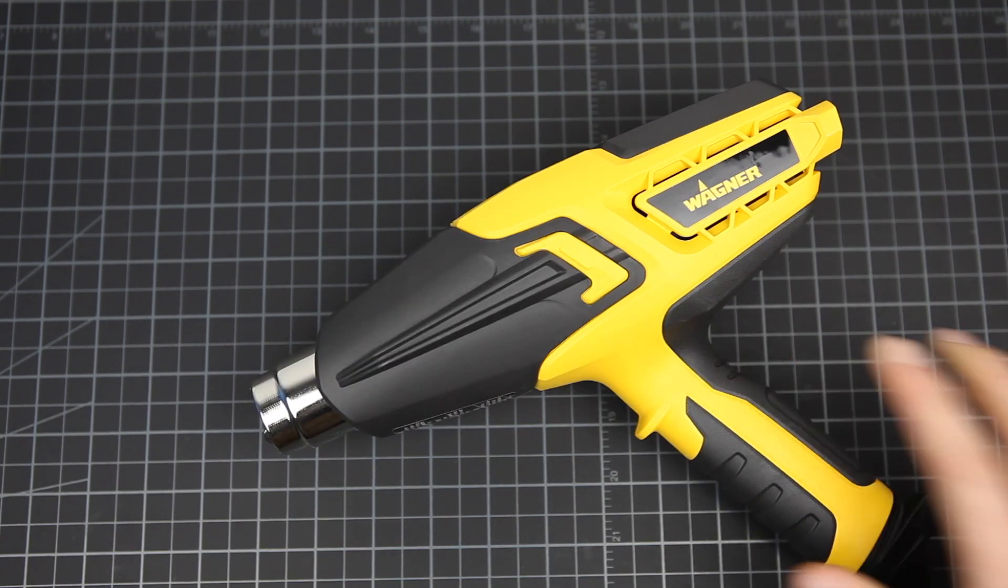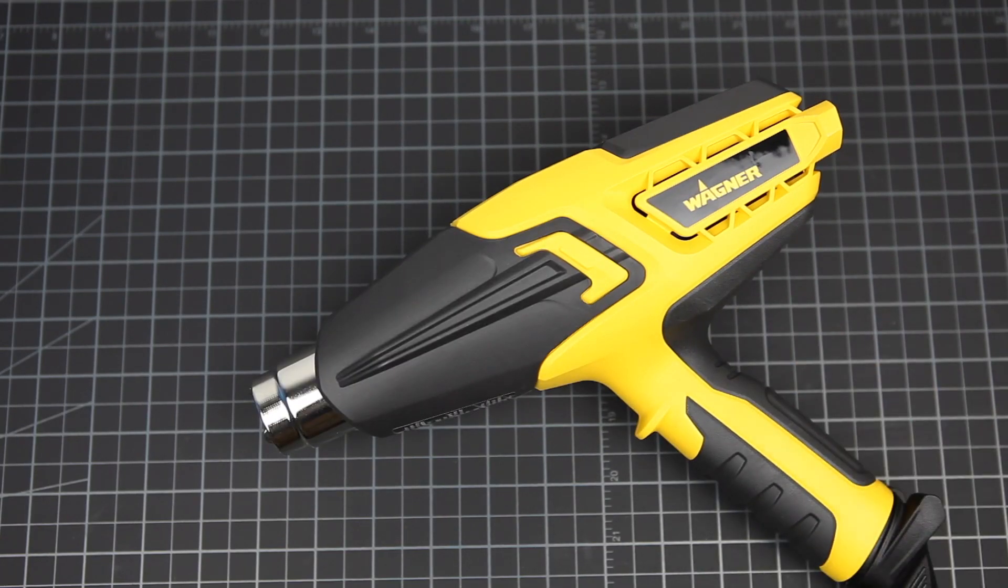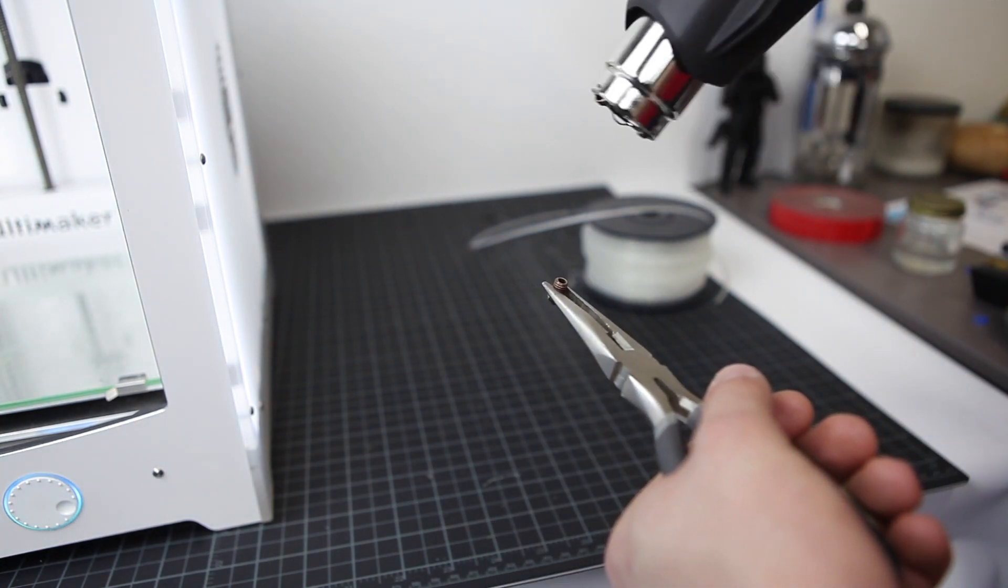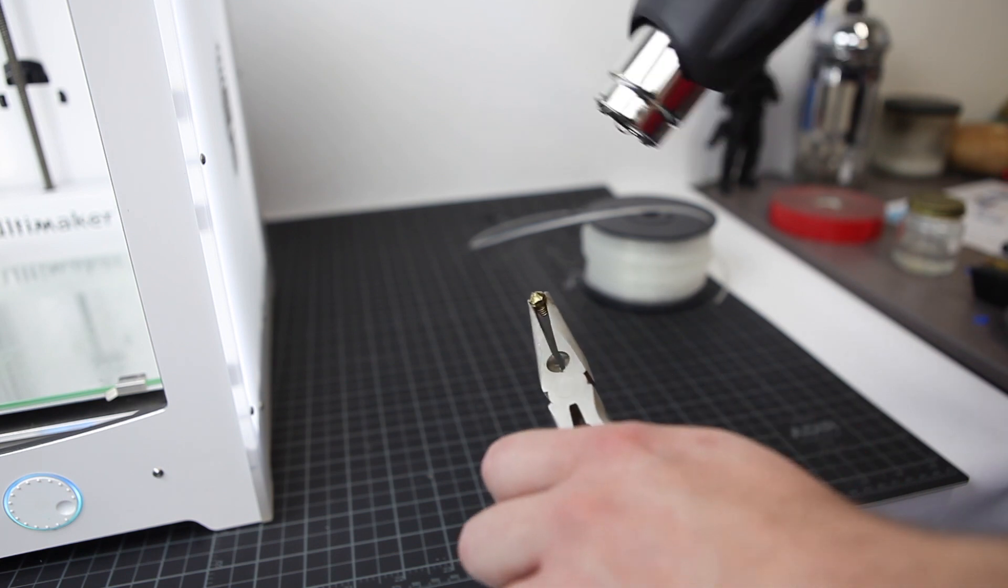Or a heat gun or blow torch can melt out the remaining filament. With these tools, wave the heat over the nozzle like blow drying your hair. Direct heat from the blow torch can actually melt your nozzle. After using any of these methods, you should be able to look down the opening of your nozzle and see through the tip without any blockages.